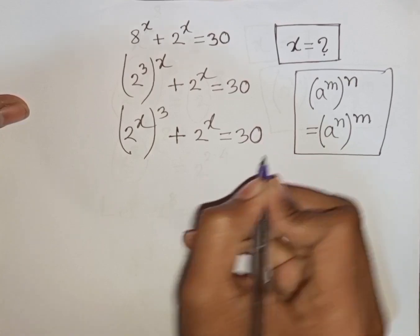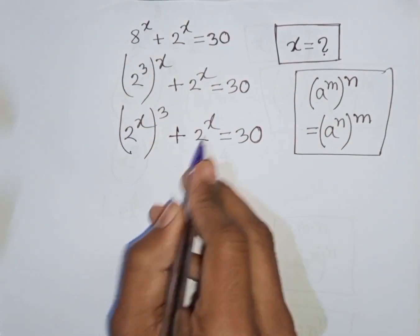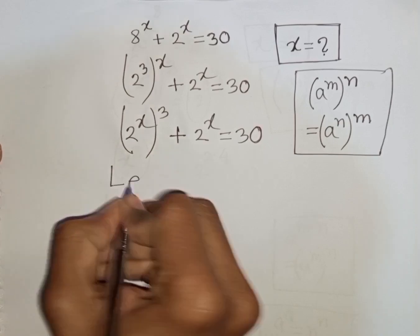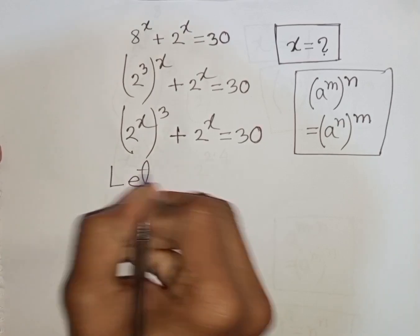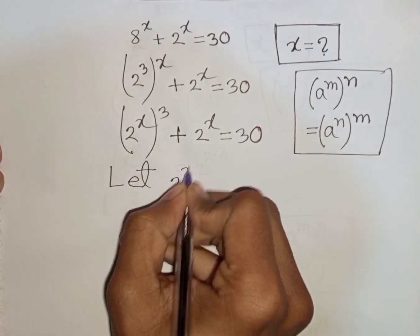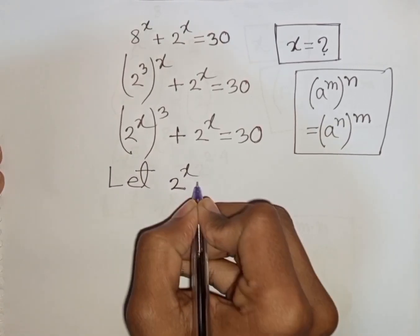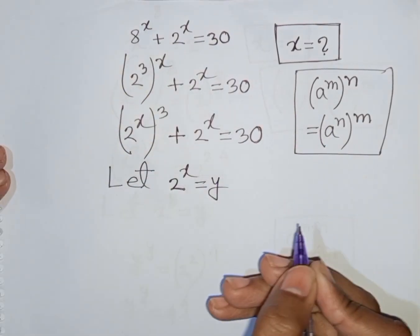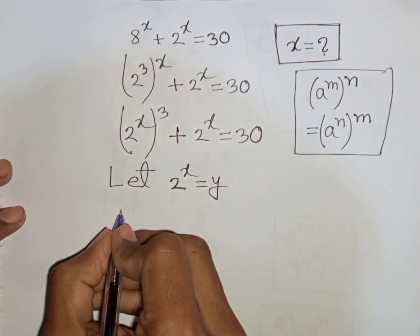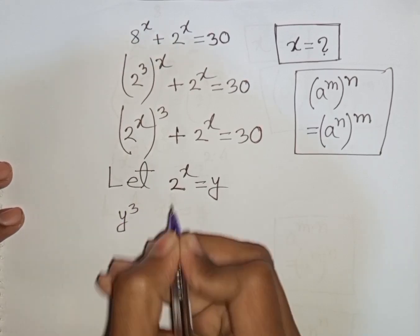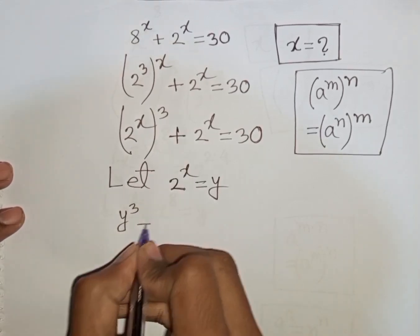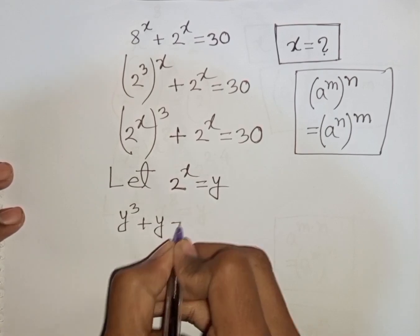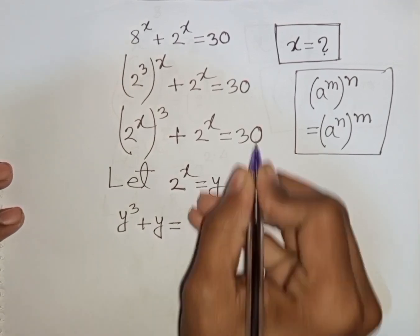Now we see 2 power x and 2 power x — both terms are the same. So let 2 power x be substituted by y. So our equation will be y cubed plus y is equal to 30.